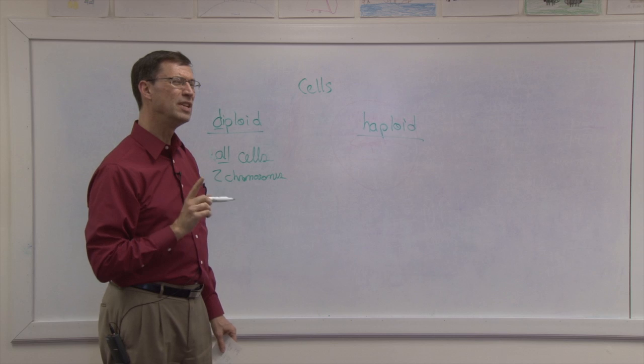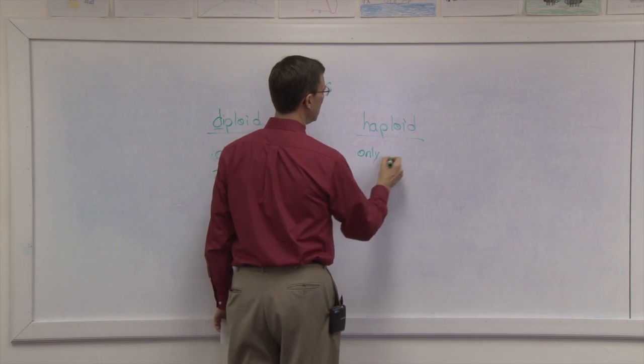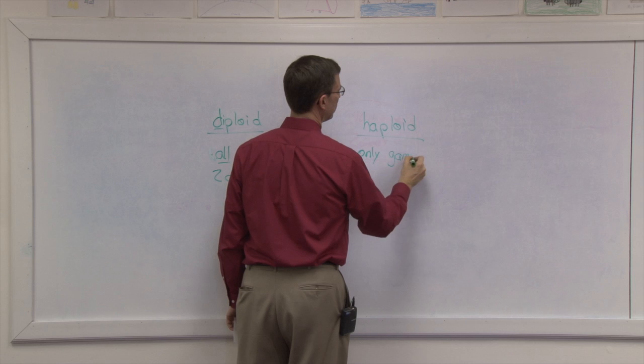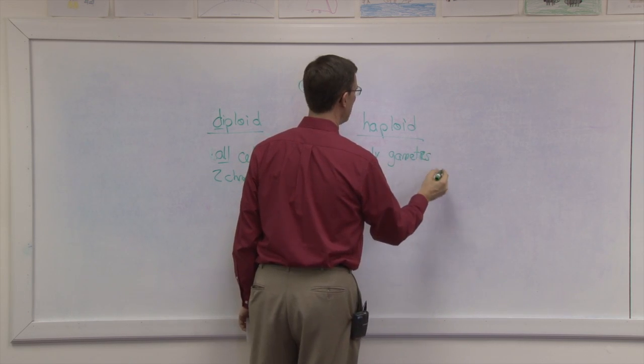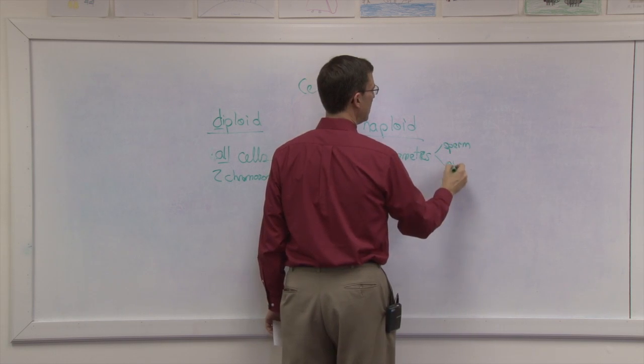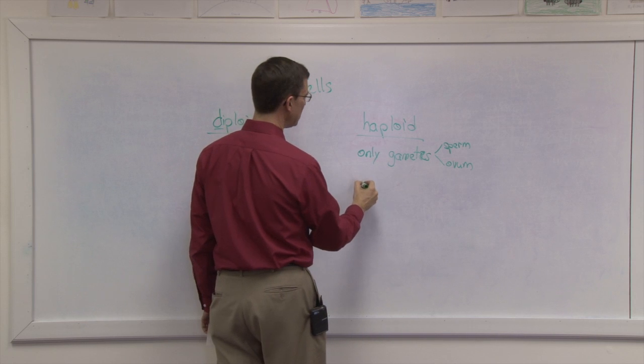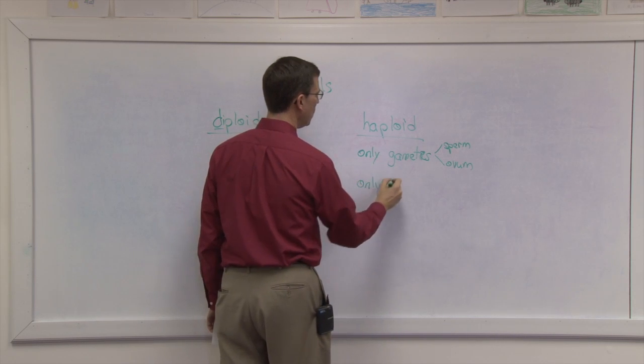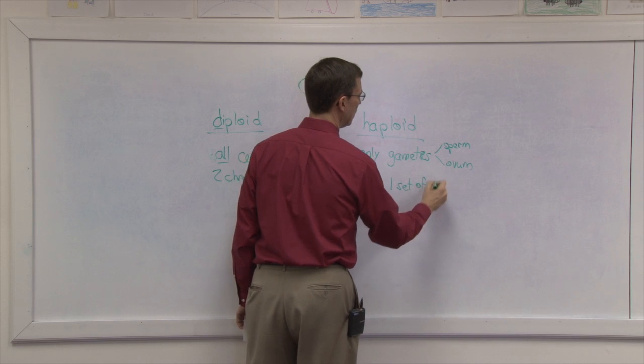These are only the gametes, which would be the sperm produced by dad and the ovum produced by mom. And these gametes have only one set of chromosomes.